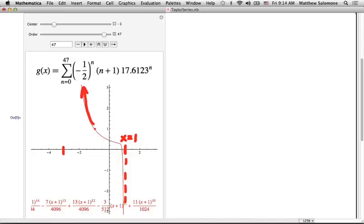Negative 2. As it turns out, it's a little further. Oh, that's right. So the interval of convergence for this power series ended up being from x equals negative 3 to x equals positive 1.